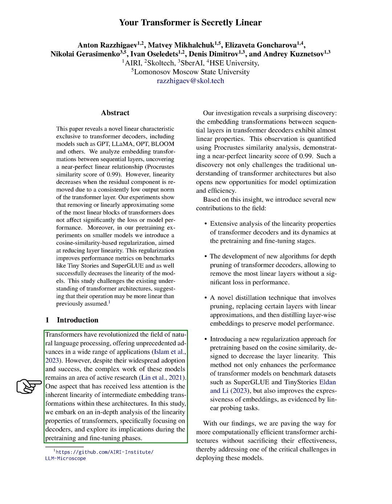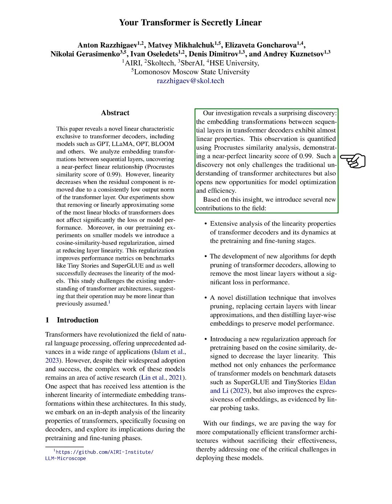One aspect that has caught our attention is the linearity within transformer decoders. Our detailed analysis uncovers a striking revelation: the transformations between layers in transformer decoders exhibit near-linear properties, as shown by a Procrustes similarity score of 0.99. This discovery challenges conventional wisdom about transformer architectures and presents new avenues for model enhancement and efficiency.